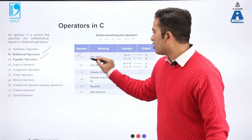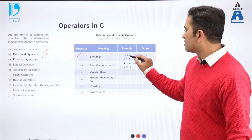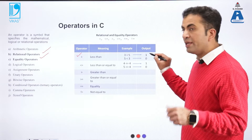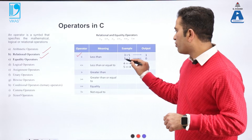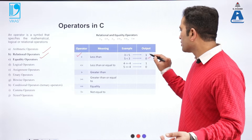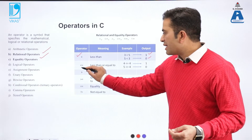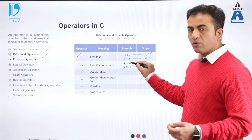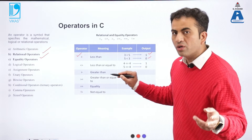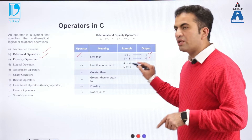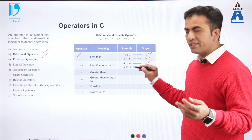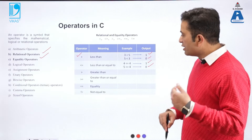This is the less-than operator. 3 less than 5 — if this statement is true, the output will be 1. If false, such as 5 less than 3, the output will be 0. Less-than-or-equal-to: 4 less than or equal to 4 — the condition is true because 4 is equal to 4, so the output is 1. And 5 less than or equal to 4 is false, so the output is 0.